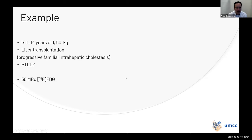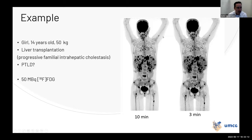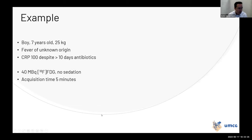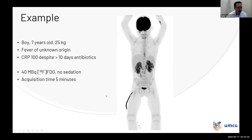More examples in children: a 14-year-old girl post-liver transplantation, question of post-transplant lymphoproliferative disease (PTLD), 50 kg. Comparing a 10-minute scan versus a three-minute scan — the three-minute scan is clearly sufficient for diagnosing PTLD. Another case: a seven-year-old, 25 kg, fever of unknown origin with high CRP. Scanned for five minutes — the result showed bilateral nephritis. Five-minute scan time, no sedation.